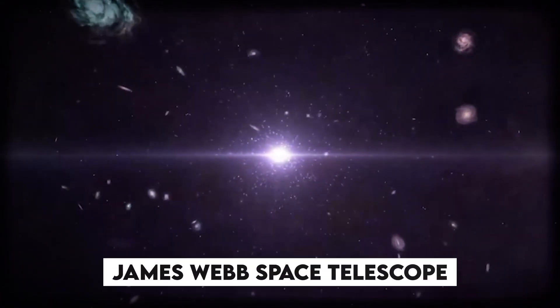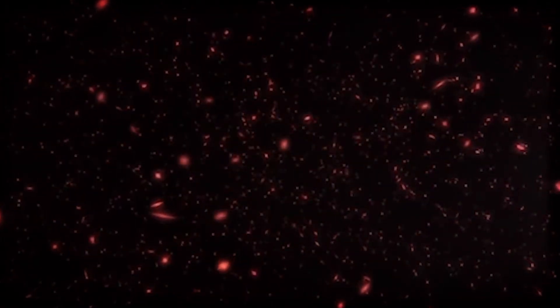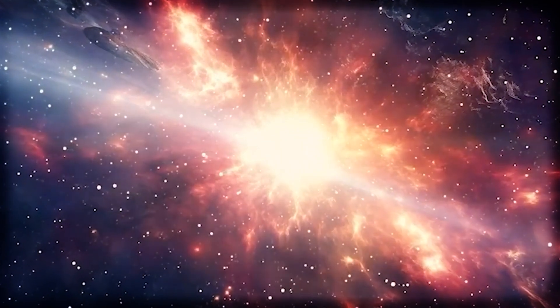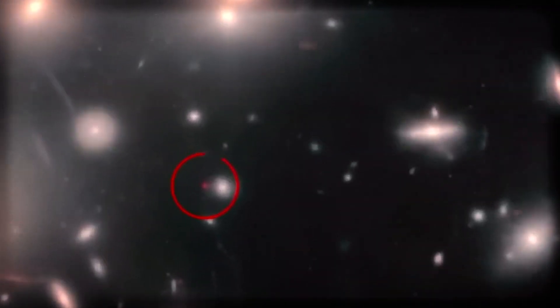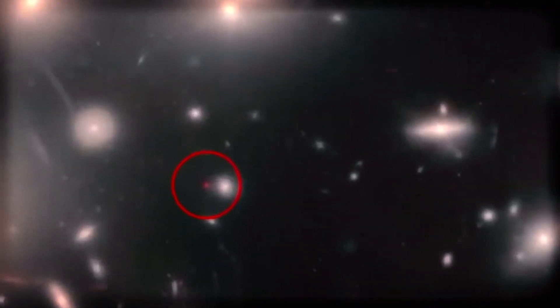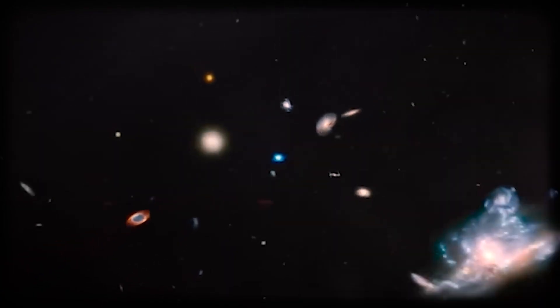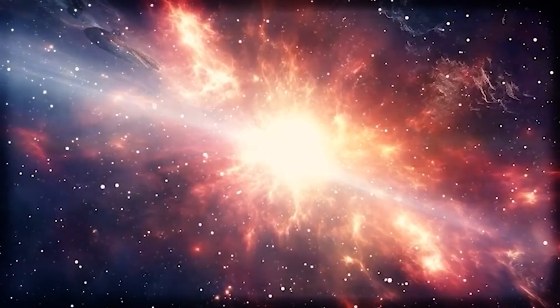We're talking about deep-field images captured by the James Webb Space Telescope, humanity's most powerful eye in the sky. Webb is looking farther back in time than anything before it, peering billions of years into the past. And what it's found is, frankly, messing with everything we thought we knew. We're not just finding galaxies, we're finding something else.